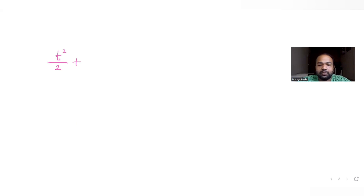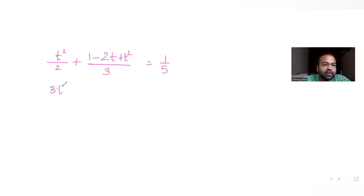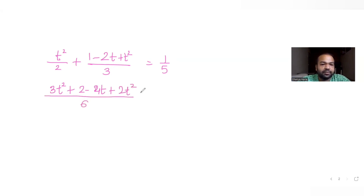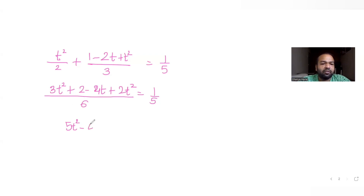Expanding (1 − t)² gives 1 − 2t + t². So we have t²/2 + (1 − 2t + t²)/3 = 1/5. Cross multiplying: 3t² + 2(1 − 2t + t²) over 6 = 1/5, which gives 3t² + 2 − 4t + 2t² in the numerator over 6 = 1/5.